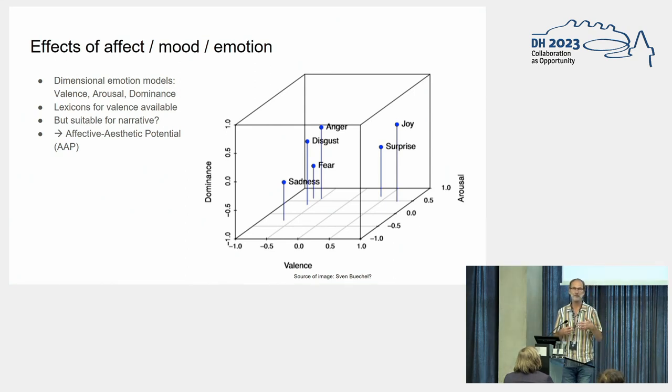Especially valence is often used in the study of texts. Valence is the positive or negative evaluative aspect of emotion. There are lexicons available for valence, for instance created by asking people what feeling they associate with a word. But the question is to what extent that concept is suitable for narrative, which has special characteristics making it different from product reviews or other texts.